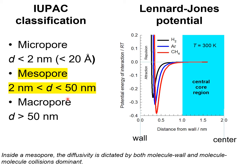On the other hand, for mesopores with diameters larger than 2 nanometers, we have a central core region. In the region close to the wall, the potential energy of interactions is dominated by interactions with the pore wall, whereas in the central core region, the gas molecule is not under the influence of interactions with the pore wall. So within mesopores, the diffusivity is dictated both by molecule-wall and molecule-molecule collisions.